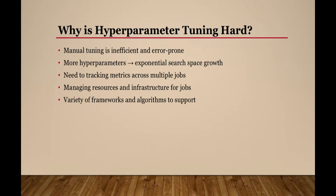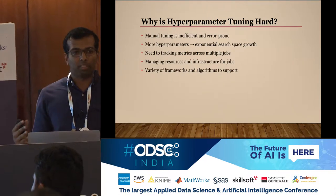So why is this hard in general? One obvious reason is it is very difficult to guess. Manual tuning is in general very inefficient and error prone. For example, take the learning rate: if your range is 0.01 to 0.05 and it is a double value, you have infinite values possible. Similarly, with multiple hyperparameters, your search space becomes exponential.